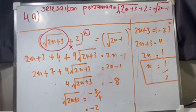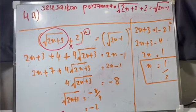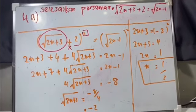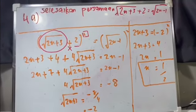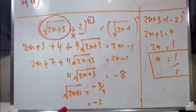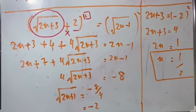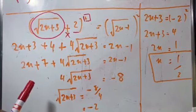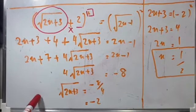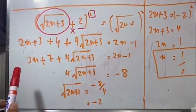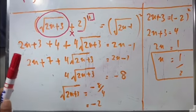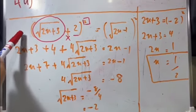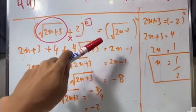Soalan 4A: Selesaikan perselamaan cert 2x+3 tambah 2 sama dengan cert 2x-1. Kita dah nampak di sebelah kiri dan sebelah kanan dua-dua ada cert. Oleh itu, kita boleh hilangkan cert tu dengan kuasa 2. Seperti ni: sebelah kiri kuasa 2, sebelah kanan pun kita kuasa 2.